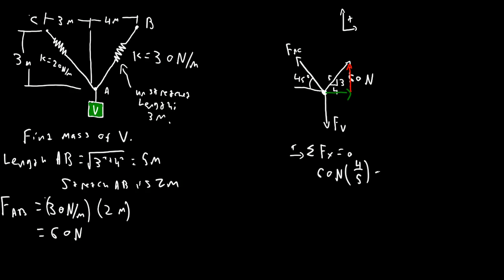And minus FAC times sine of 45 degrees, which is 1 over root 2. Always has been, it's a very common angle. Equals 0. Therefore FAC equals 60 newtons times 4 over 5 times root 2.